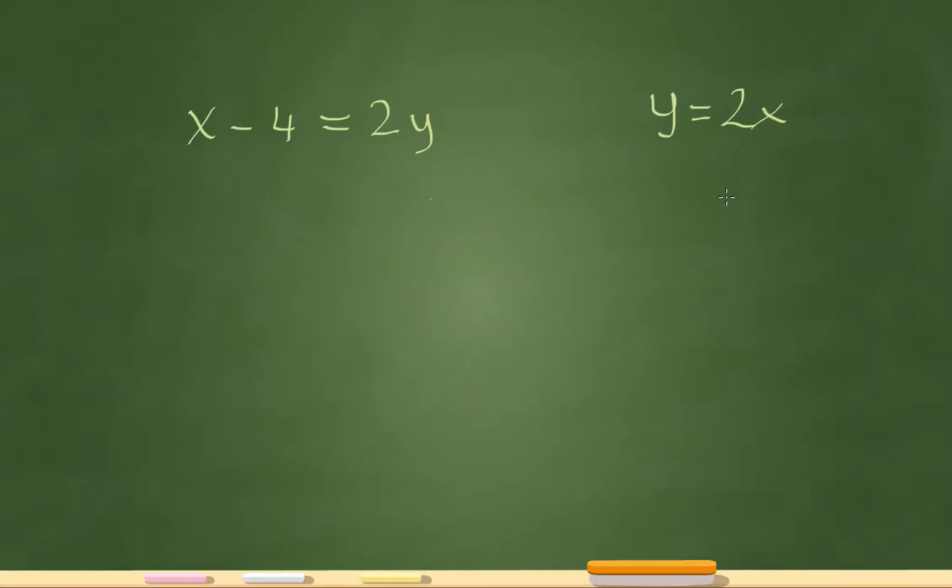Okay, so those are two equations I have and the question is asking what's the value of x. So I'll use substitution here. I know the value of y is 2x. So instead of that y, I'll replace that y with 2x. So let's rewrite that. So it'll be x minus 4 equals 2 times 2x.